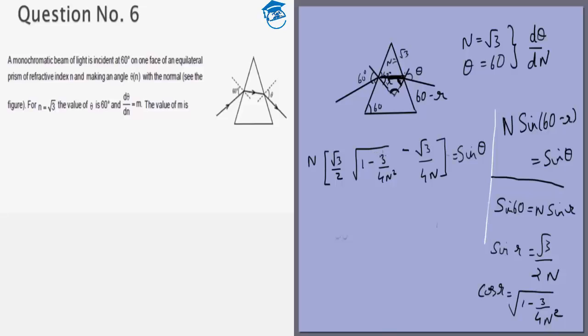Now I can try to simplify it but it becomes easier if I differentiate it straight away. So sin theta gives me cos theta d theta by dn and this is equal to the derivative of this whole thing.